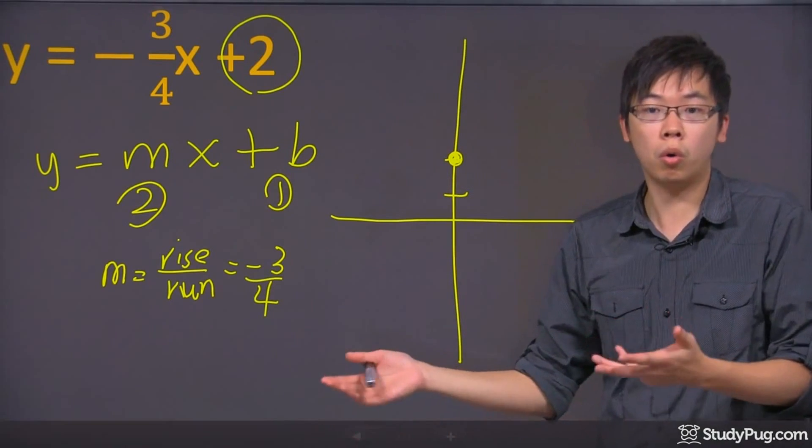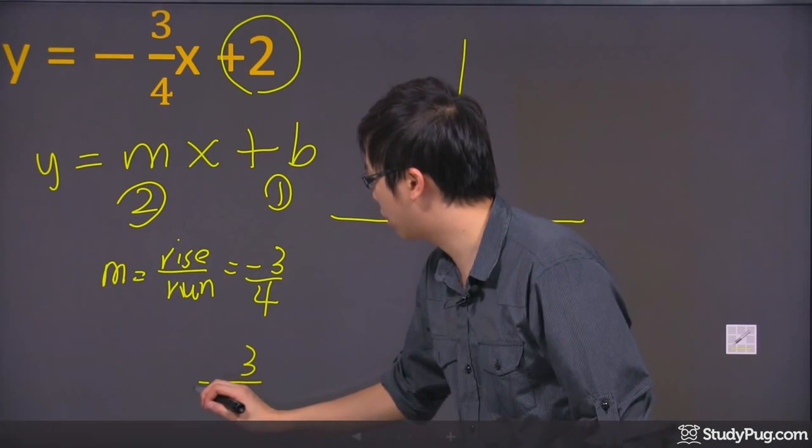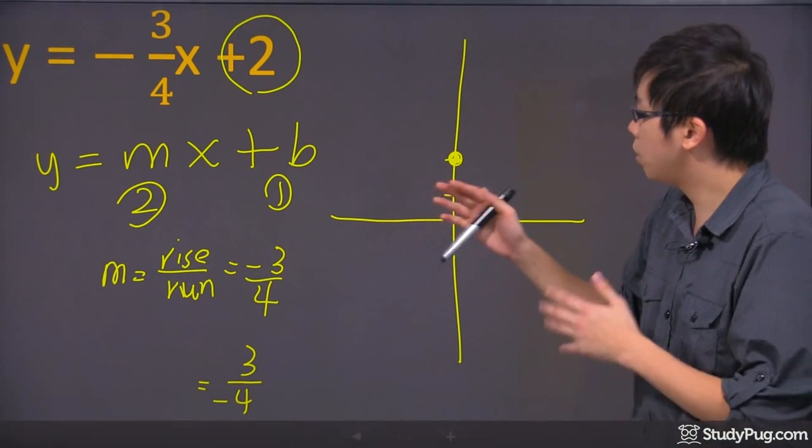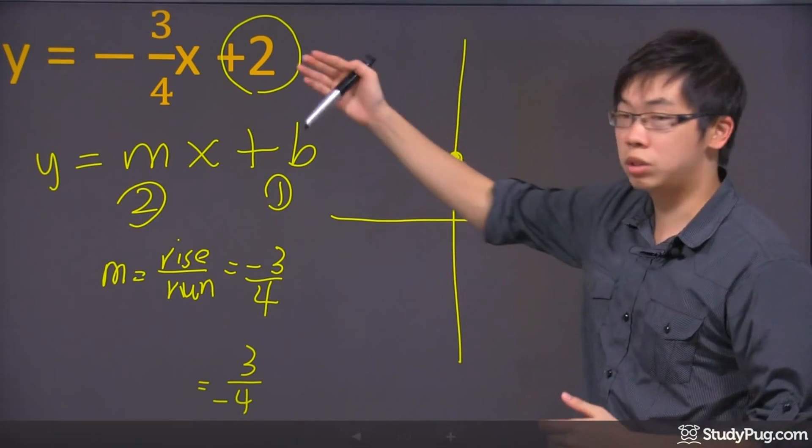So negative 3 over 4 or 3 over negative 4, they are actually the same thing. So what I'm going to do is I'm going to start from the 2. You have to start from the y-intercept, and you're going to go down 3 and over 4.